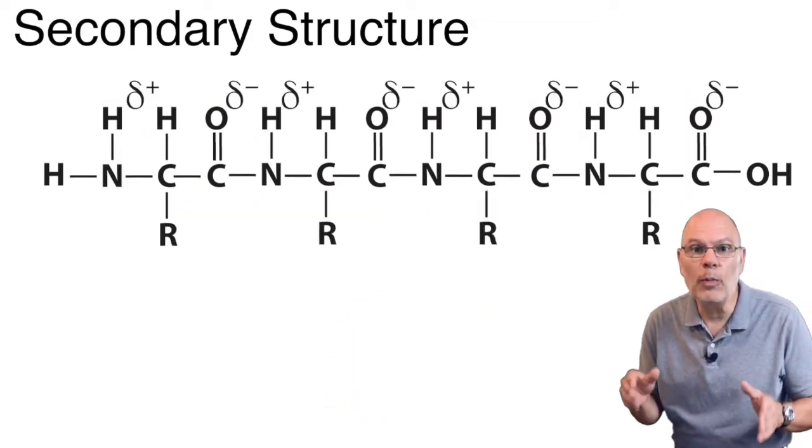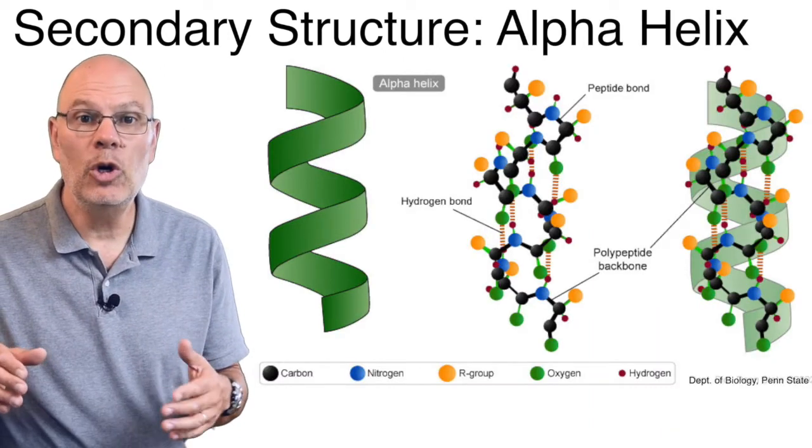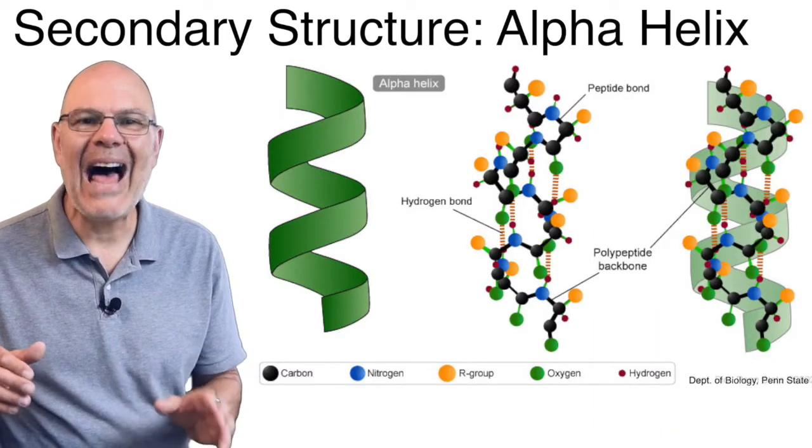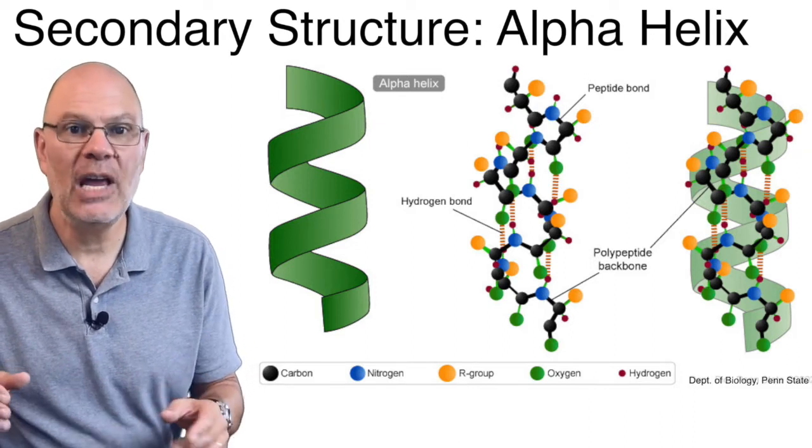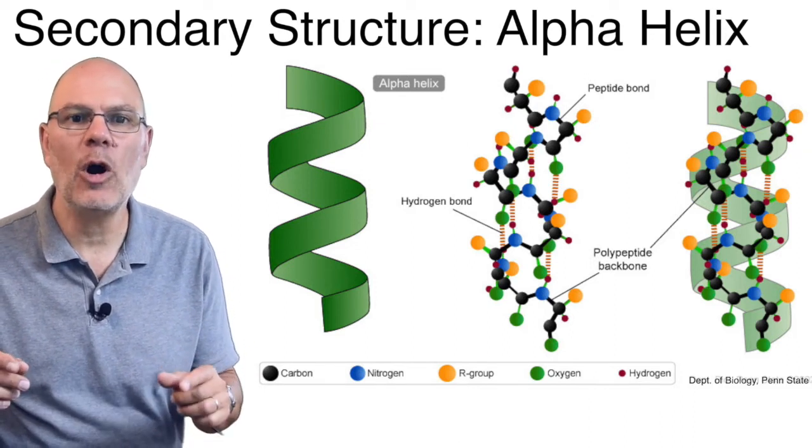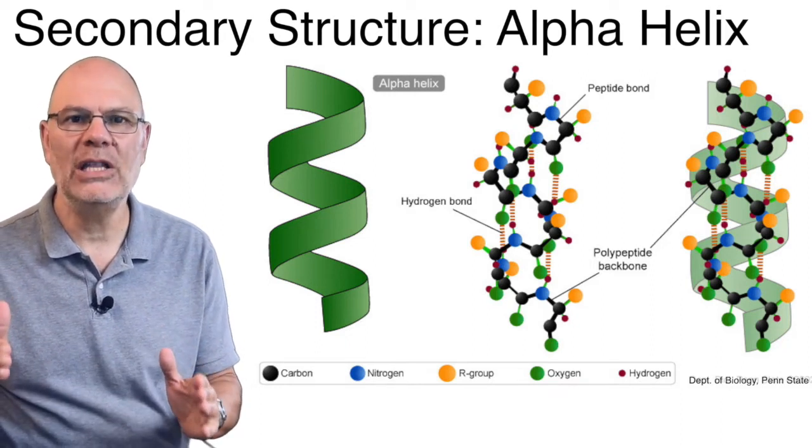Remember that these functional groups are polar, and they have opposite charges. One of the shapes that can emerge from this kind of bonding is an alpha helix. It's a corkscrew, and it's held together in this shape by hydrogen bonds between the carbonyls and aminos that are four amino acids apart in the chain.